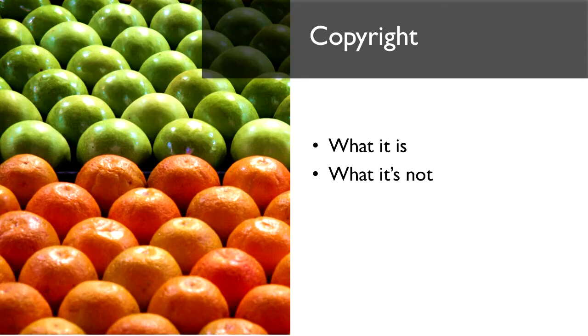The only way copyright stops is 70 years after the creator dies in Australia, or if the creator sells that copyright to somebody else — either for money or through some other kind of contract. A lot of competitions online, if you submit a photo, the fine print will say you're actually handing over your copyright to that image. It's worth noting that copyright is completely separate from the licence on an image. Something that has a completely open source licence, like Creative Commons Zero, is still under copyright.